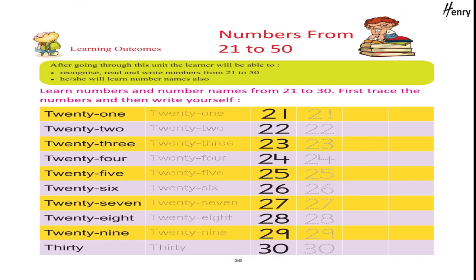Numbers from 21 to 50. Learning outcomes: after going through this unit, the learner will be able to recognize, read, and write numbers from 21 to 50. He/she will learn number names also. Learn numbers and number names from 21 to 30. First trace the numbers and then write yourself: 21, 22, 23, 24, 25.